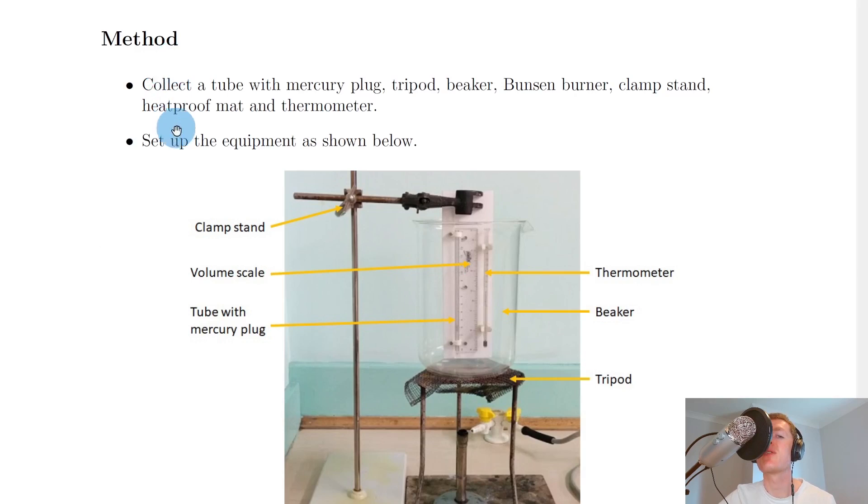Next we have the method. There are other ways of doing this experiment but I'm going to show you one method. You're going to collect a tube with mercury plug, tripod, beaker, Bunsen burner, clamp stand, heatproof mat and thermometer.